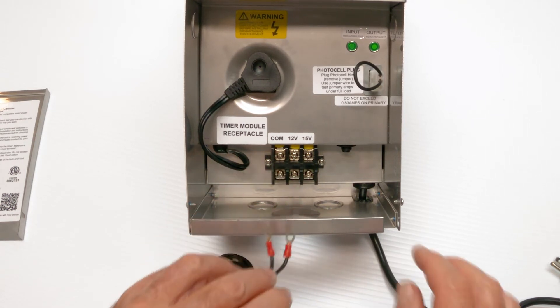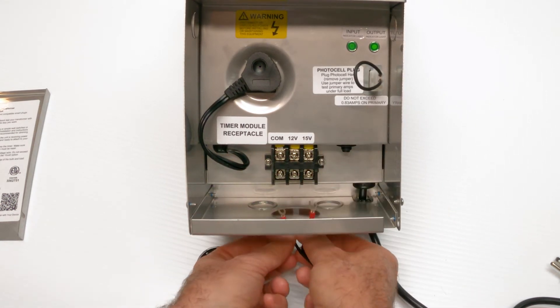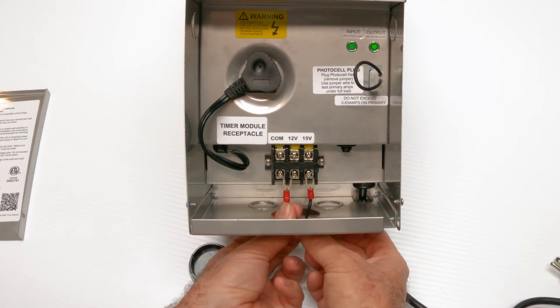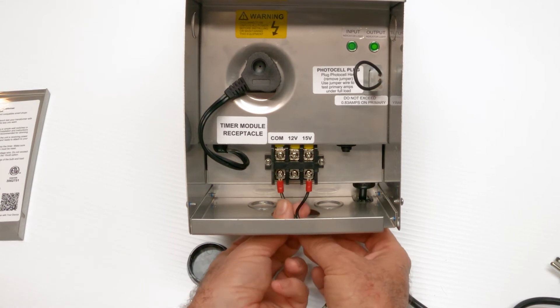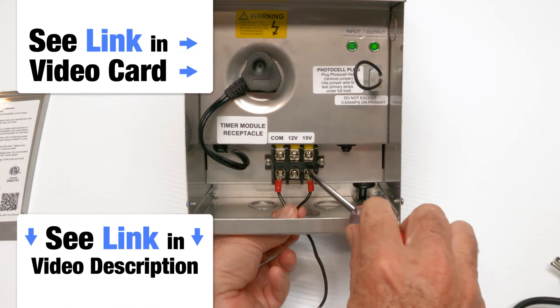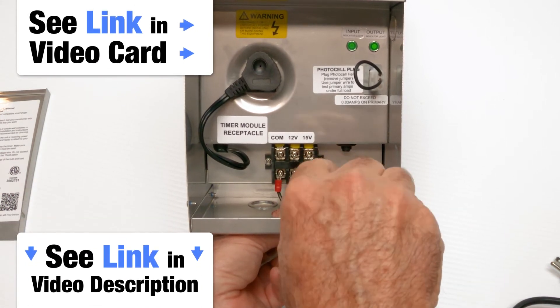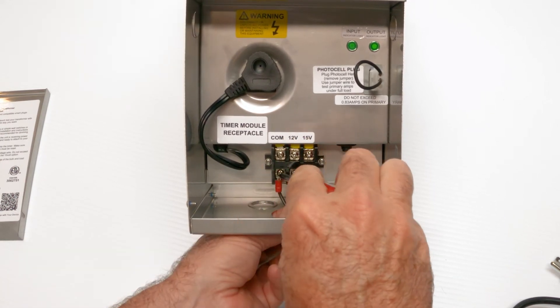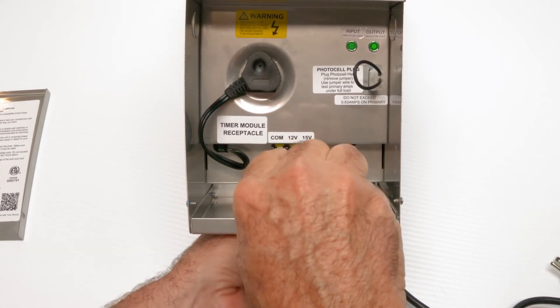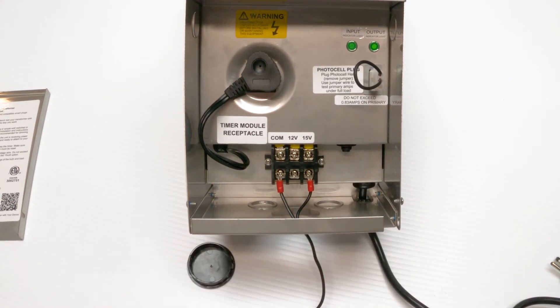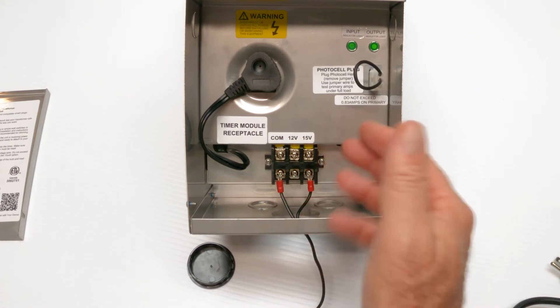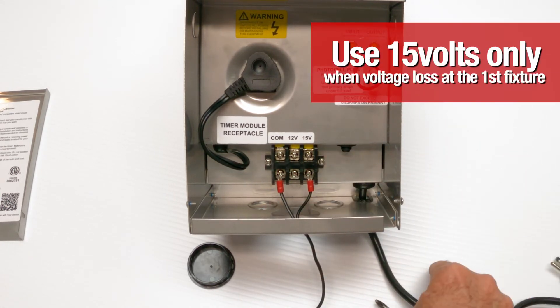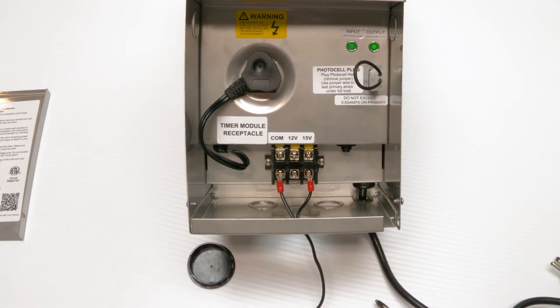Now there is a 15 volt option here where you would run it this way. If you're running really long loads out there in the field and you need a little extra voltage boost. Now we have a video on landscape lighting voltage loss where we did a real field test and we addressed this 15 volt. I don't want you to connect to it right away.